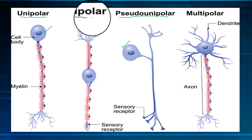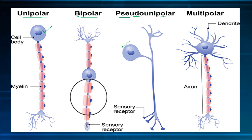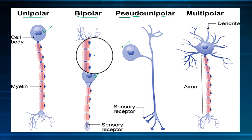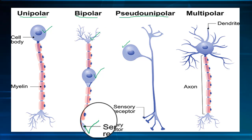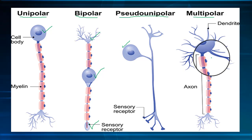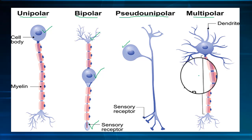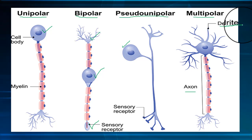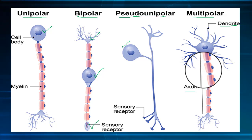Bipolar neurons have two processes arising from the central cell body, typically one axon and one dendrite; these cells are found in the retina of the human eye. Multipolar neurons have one axon and many dendrites, with the cell body displaced to one side of the axon. Motor neurons are a prime example of multipolar neurons.